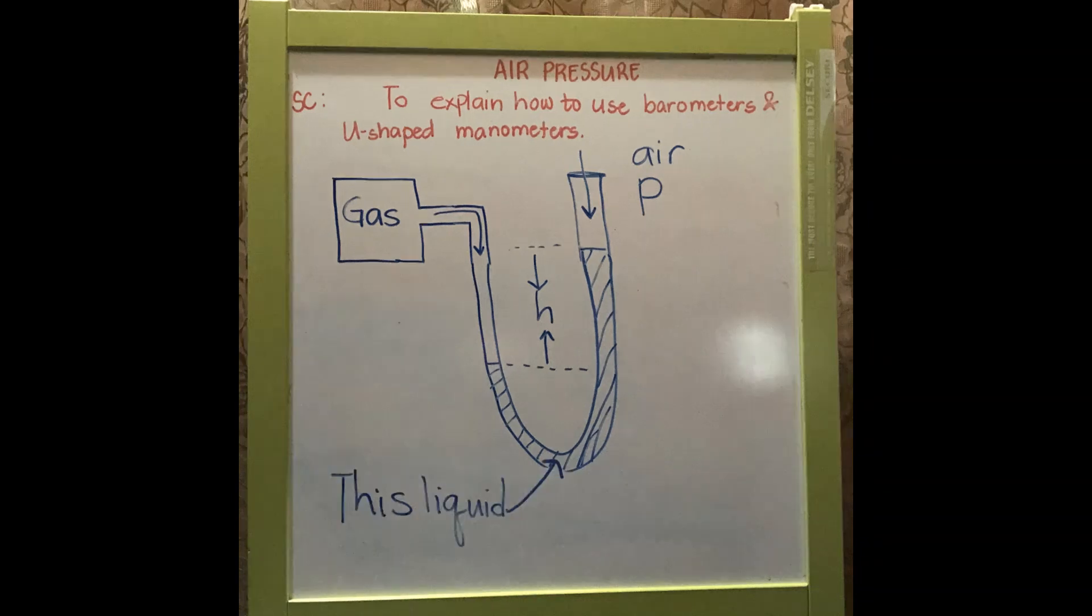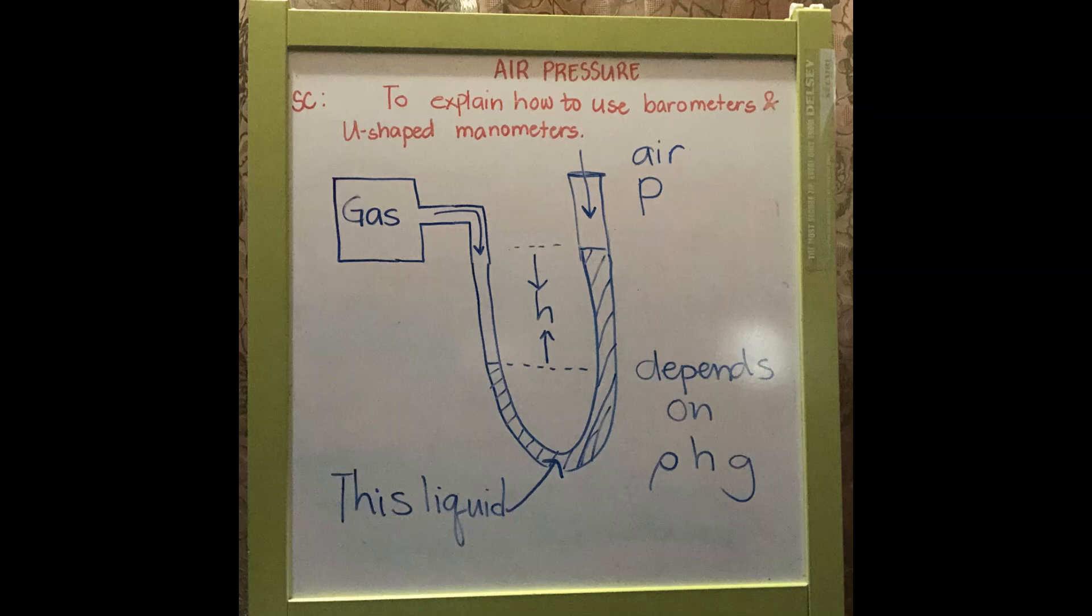Whatever type of liquid is used inside the u-shaped manometer, it will always depend on its density, the height difference, and the gravitational field strength.